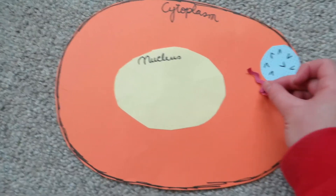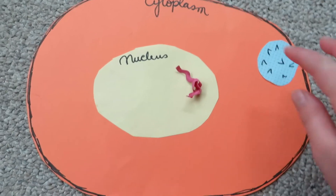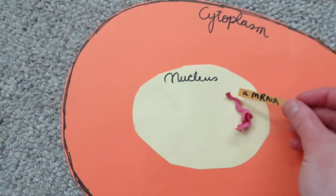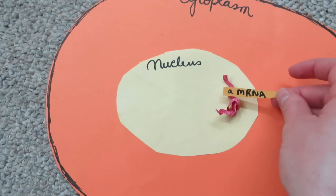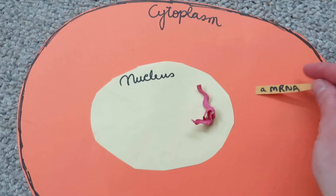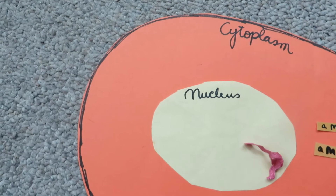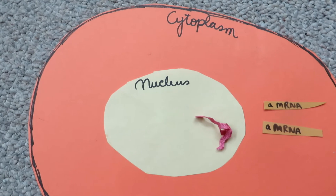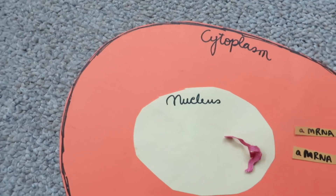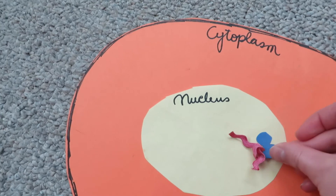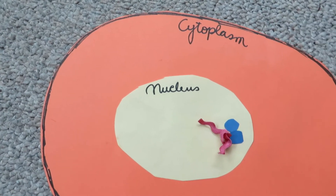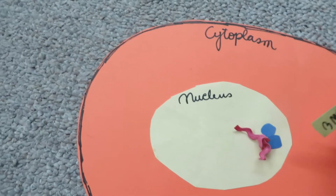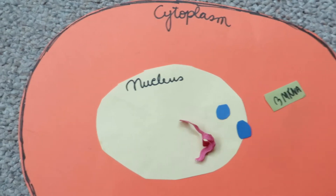The virus releases its DNA into the nucleus. Once it does that, enzymes trigger it to produce mRNA. The first mRNA produced is called alpha mRNA, and that's released into the cytoplasm of the cell. The mRNA is then swapped into proteins — that's called transcription.